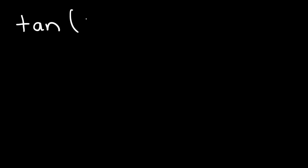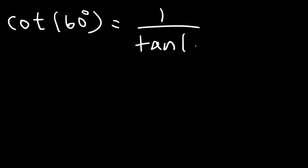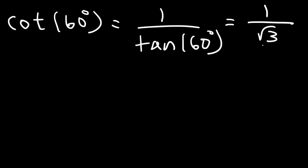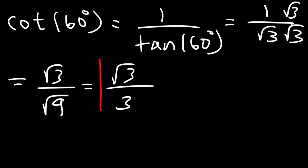Now let's try cotangent of 60 degrees. Cotangent is the reciprocal of tangent, so cotangent is 1 over tangent. We know tangent of 60 is the square root of 3, so we need to rationalize: multiply top and bottom by root 3, giving root 3 over root 9. The square root of 9 is 3, so cotangent of 60 is root 3 over 3.